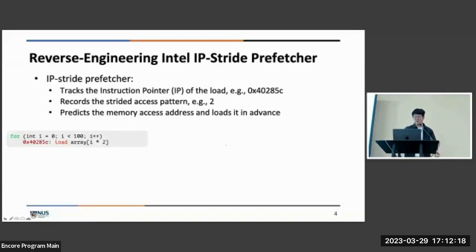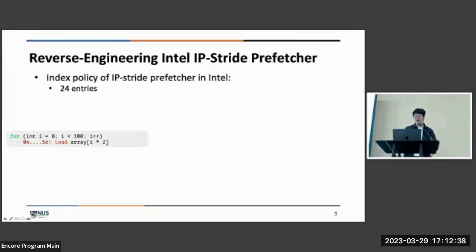As publicly known, the IP-stride prefetcher tracks the instruction pointer, or we can see the program counter, of the load. It will record the strided access pattern and predict the memory access based on this pattern and then load it into the cache in advance. We reverse engineered Intel's hardware prefetcher and found that it only has 24 entries with LRU replacement policy. But more importantly, we found that it is only indexed by the bottom eight bits of the PC and there is no extra tag checking mechanism. This gives a potential contention result for us.